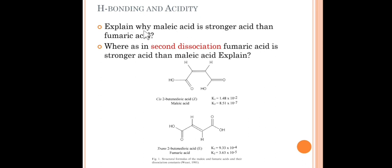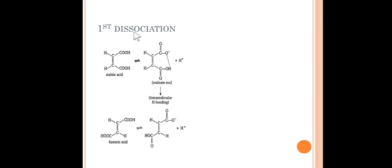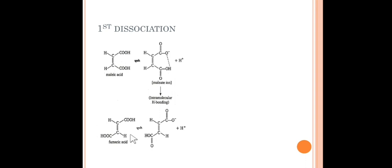In the first dissociation of this dibasic acid, H⁺ leaves and we get the conjugate base, which is stabilized by intramolecular hydrogen bonding with the other COOH group. So maleic acid is a stronger acid in first dissociation. In fumaric acid, being a trans-dibasic acid, there is no such intramolecular hydrogen bonding possible, so it is a weaker acid compared to maleic acid in the first dissociation.